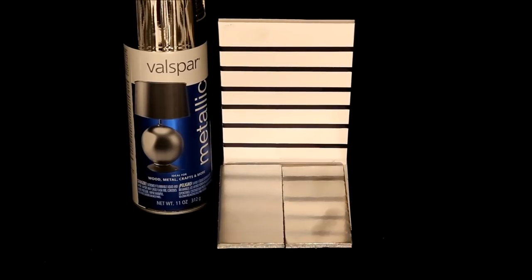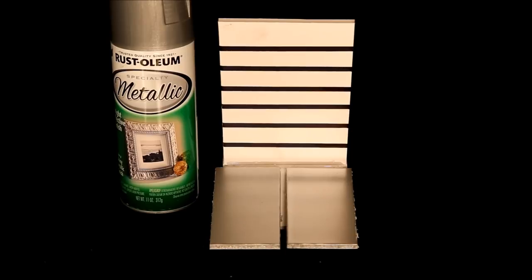Valspar Metallic Brilliant Silver did pretty good in the heavy coated sample, but again that would be difficult to do in real world without drips and sags. Rustoleum Metallic Silver did not do very well.